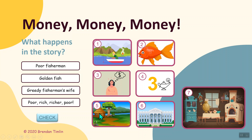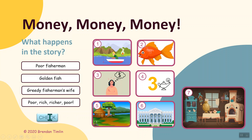From her little hut, the wife wants a palace, and then she wants to be the queen. But the fish gets angry and says no, no, no, and they go back to the poor house again.